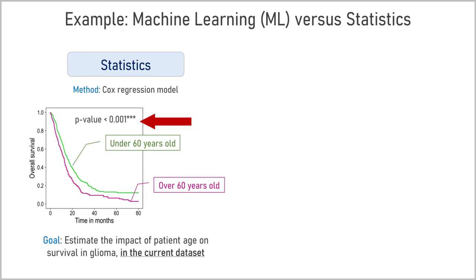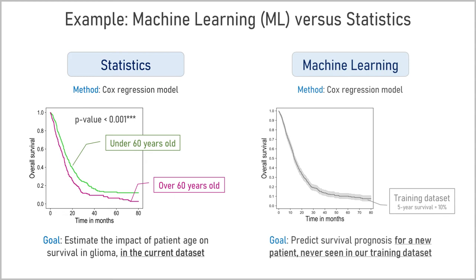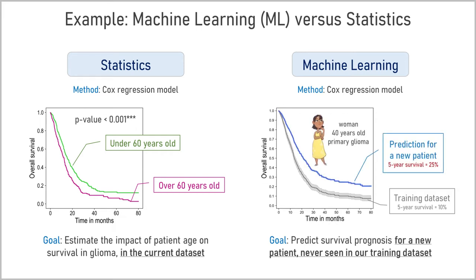If the p-value is lower than a certain threshold, usually 5%, the impact of age on survival probability is considered significant. In machine learning, we can use the same model, but the goal is different. Our dataset is used here as a training dataset to predict survival prognosis for new patients never seen in our training data. For example, a woman of 40 years old with primary glioma — we can predict survival probability individually for this patient. Unlike statistical approaches, we don't calculate p-values or statistical significance; instead, we estimate the performance of the trained model with different metrics.